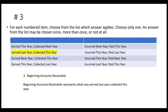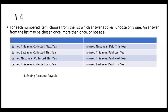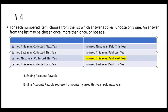Number three: beginning accounts receivable. Beginning receivables were earned last year and collected this year — they are not this year's earnings. When collected this year, we debit cash and credit accounts receivable, but those collections will not impact the income statement this year because they were last year's earnings. Number four: ending accounts payable.